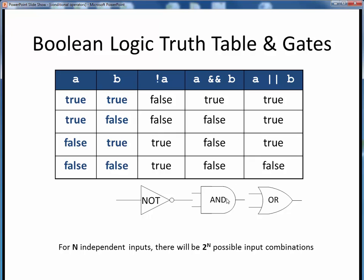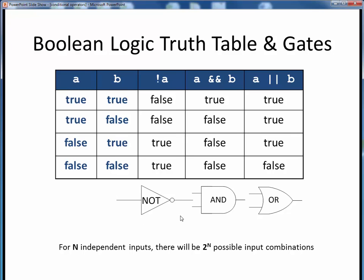The AND is a binary operator, which means it takes two operands, or two inputs, to its logic gate. The result of the AND operator is true only for the case where both of its inputs are logical true, and false for all other input combinations. The OR is also a binary operator, but by contrast, the result of the OR operator is true if either or both of its inputs are logical true, and false only if both of its inputs are logical false. Hopefully all of this looks familiar from a prior CS prerequisite course. This is how logic is implemented in hardware — specifically in microprocessors — but this is how the equivalent logic is implemented in software.